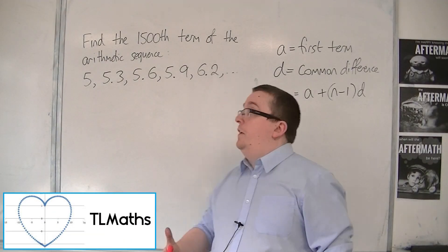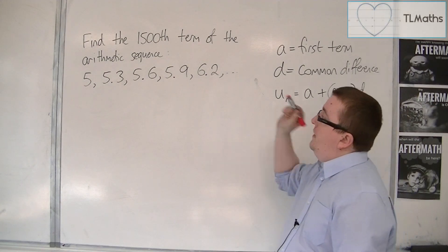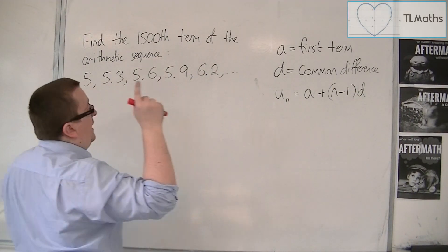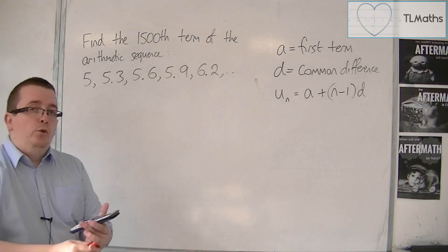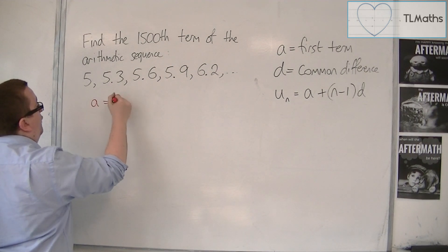So let's say I've been asked to find the 1,500th term of this arithmetic sequence. So what we want to do is find the nth term. And in order to do that, I must first identify a, the first term, which I can see is 5.